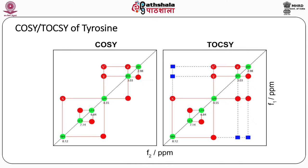For assignment of various signals to their particular amino acids, we run two-dimensional homonuclear experiments — COSY and TOCSY. Taking tyrosine as an example: in COSY, you see peaks between directly, vicinally coupled protons — NH at 8.12 ppm to alpha H at 4.55 ppm, and from alpha H to the two beta H at 3.03 and 2.98 ppm. In TOCSY, you additionally see cross peaks between NH at 8.12 ppm and both beta H at 3.03 and 2.98 ppm.